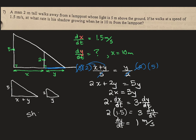And there we go. So the shadow would be growing, because it's positive, 1 meter per second, at a rate of 1 meter per second. And there we go. All righty. Hope that helped.